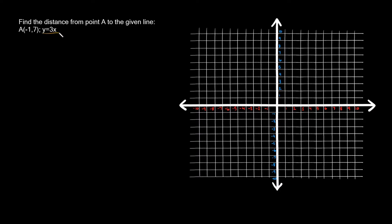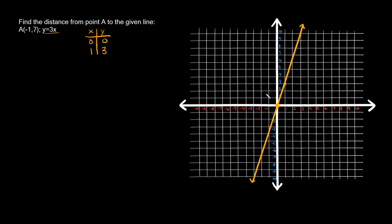The line given is y equals 3x. First thing we're going to do is just graph this. A nice simple way I like to graph lines is by making a little XY table. Let's plug in 0 and 1 for x. If I plug in 0, I get 3 times 0 which is 0, so y equals 0. If I plug in 1, I get 3 times 1 which is 3, so y equals 3. We've got two points — that's all we need to graph a line. Our first point is at (0, 0) and the other is at (1, 3). We can draw a straight line through them.